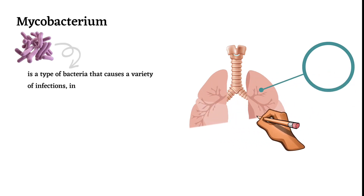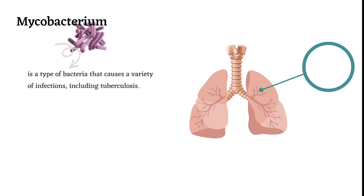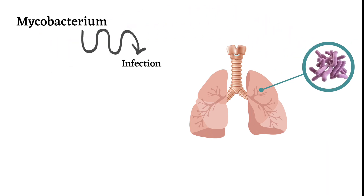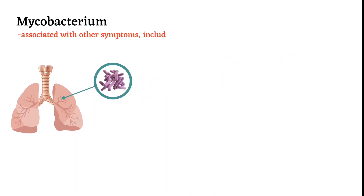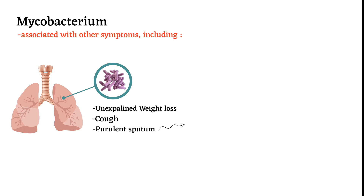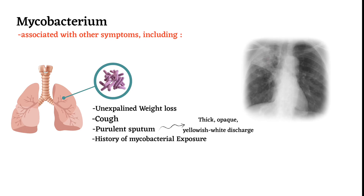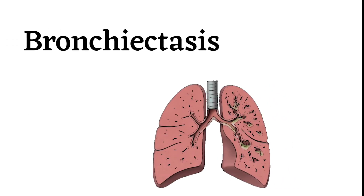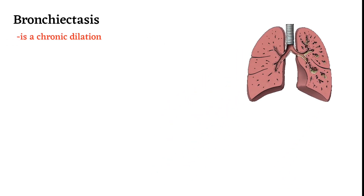The patient is usually prescribed cough suppressants and antibiotics. Second, tuberculosis and other mycobacterial infections: mycobacterium is a type of bacteria that causes a variety of infections including tuberculosis. A mycobacterial infection can destroy pulmonary tissue, usually by forming cavities in the airway walls. The hemoptysis that results is usually mild to moderate and may be associated with other symptoms including unexplained weight loss and a history of mycobacterial exposure. A chest X-ray usually shows signs of infection including a visible cavity.